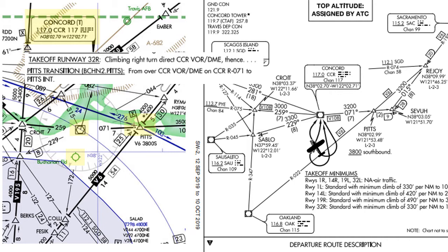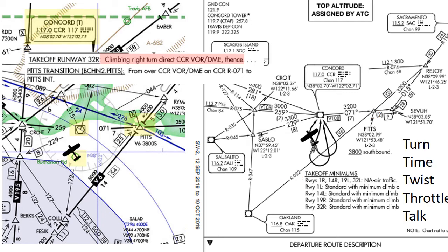So now let's go through the procedure on the graphical representation, doing our five T's along the way. For this exercise, I'll assume they cleared me for this SID and gave me an initial altitude of 3,000 feet. We start off on runway 32 right, on a heading of roughly 320. We planned ahead, and so the Concord VOR is tuned and identified in our number 1, and we've centered the OBS with a 'from' flag. Let's set our number 2 to Oakland VOR and identify that, and we'll tune the 022 radial for that one, since that's what's eventually going to identify Pitts for us.